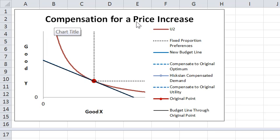In this video we're going to talk about compensation for a price increase. That is when a price of a good, in this case good X, goes up. How much income do you need to give to the consumer to compensate for that change?